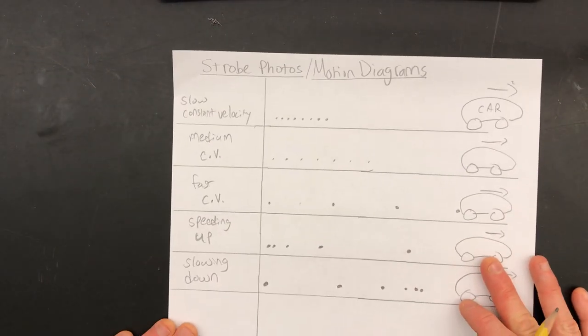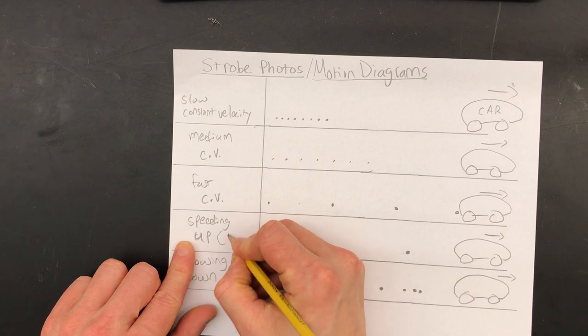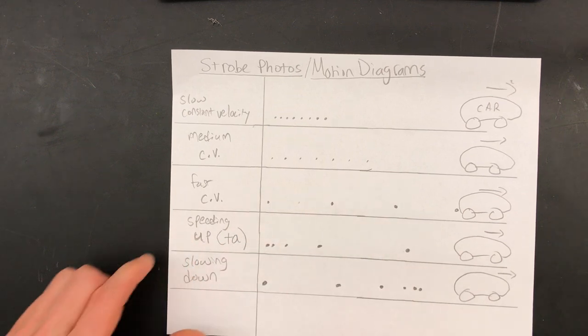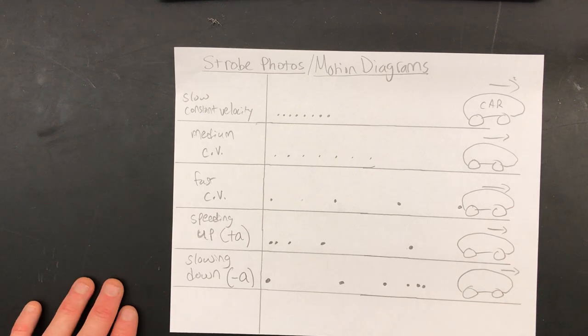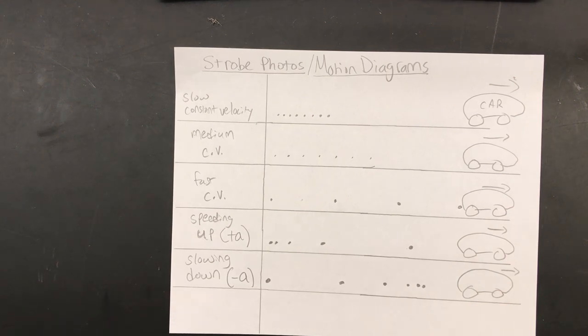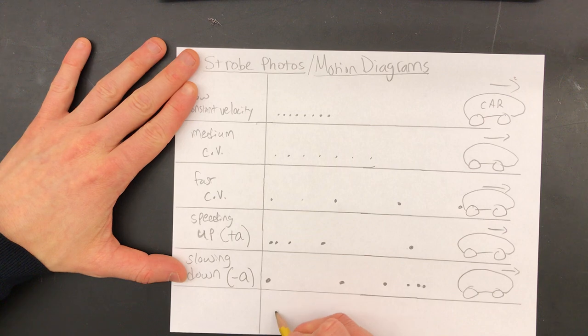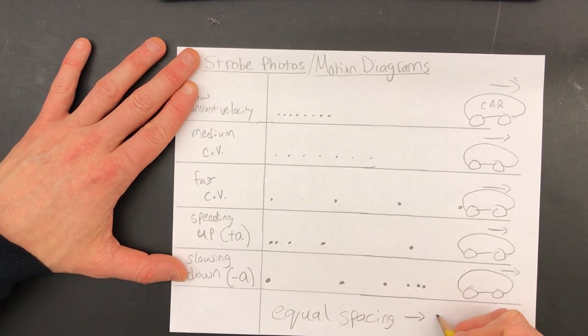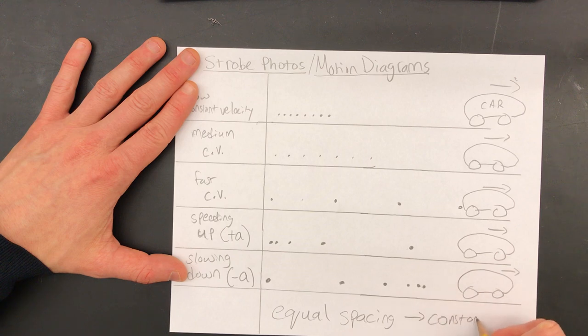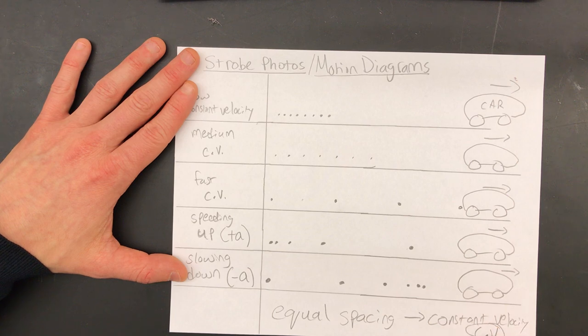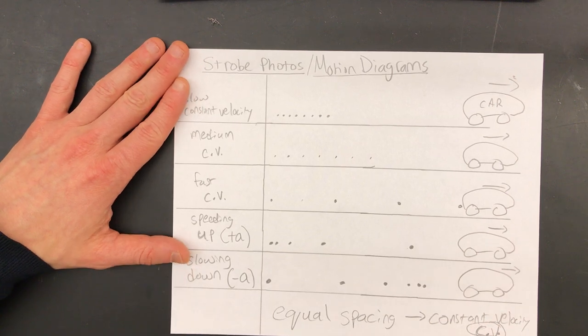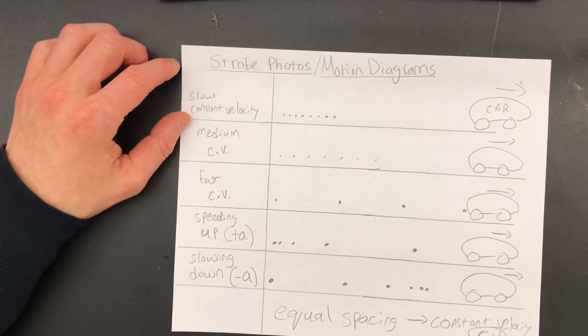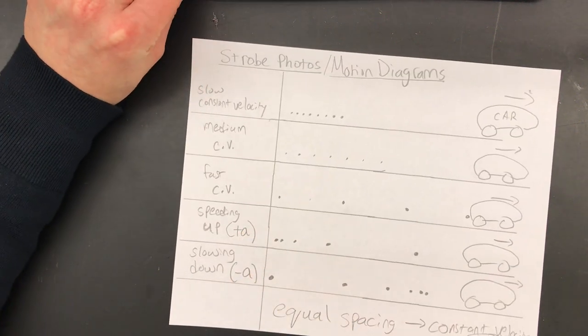So I want you to go back real quick to your diagrams you drew and label speeding up as positive A and label slowing down as negative A somewhere. Oh, I think I forgot to write also, you should write this down. Equal spacing means constant velocity. And sometimes I write CV for constant velocity, just for short. So we covered positive A, slowing down as negative A. Write those down.